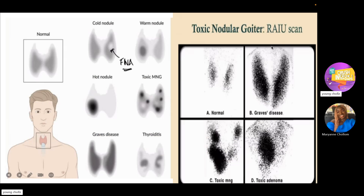On radioactive iodine uptake scan: in Graves' disease you have goiter, so the thyroid gland is enlarged and shows hyperfunction. In thyroiditis, the gland is enlarged but because it's not hyperfunctioning, it appears less dark. In toxic multi-nodular goiter, you see an enlarged gland with multiple nodules. In toxic adenoma, you see the gland enlarged but with just one nodule. A cold nodule suggests malignancy — the next step is fine needle aspiration biopsy.